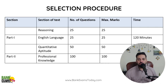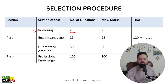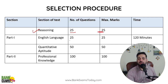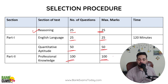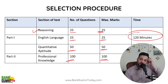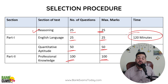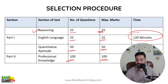Today we are going to do a detailed syllabus analysis for PNB SO Credit Officer 2023, with a module-wise in-depth analysis of the professional knowledge syllabus. The selection process has a reasoning ability section of 50 questions and 50 marks, English language 50 questions and 50 marks, quantitative aptitude 50 marks, and professional knowledge 100 questions for 50 marks. Total time is 120 minutes, and yes, time management is definitely an issue.